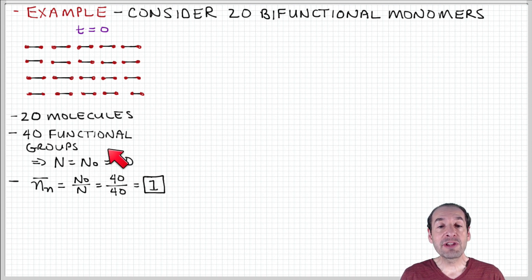We have 40 functional groups in our sample. We're at the initial state. So the current number of functional groups available is equal to the original number of functional groups available. They're both 40. And so the ratio of 40 to 40 is 1. Our degree of polymerization, our number average degree of polymerization, therefore, is 1 just based on counting the number of functional groups that are present in the sample.